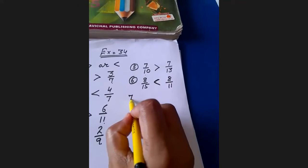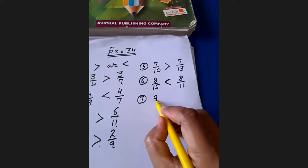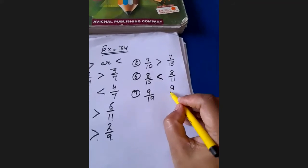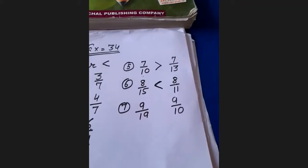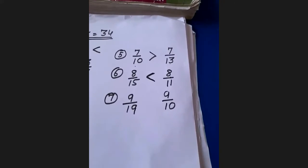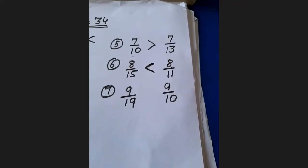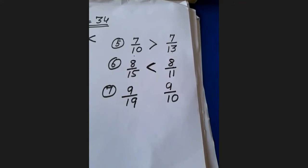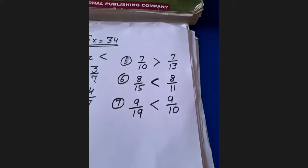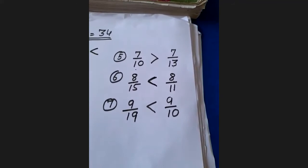Seventh question: 9 upon 19 and 9 upon 10. The numerator is 9 — same. Now compare the denominators: 19 and 10. Since these are denominators, 19 is greater than 10 as a denominator, so 9 upon 19 is less than 9 upon 10.